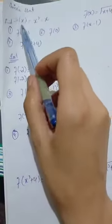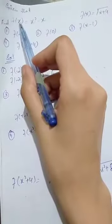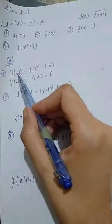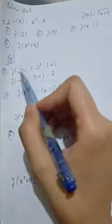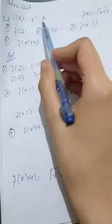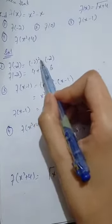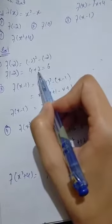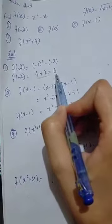First, what do we need to do? We need to find f of minus 2. So for f of minus 2, wherever x is, we put minus 2. Here x is minus 2 squared, and here x is also minus 2. This is minus 2 squared which is 4, minus minus 2 gives us minus times minus equals plus, so 4 plus 2 equals 6.